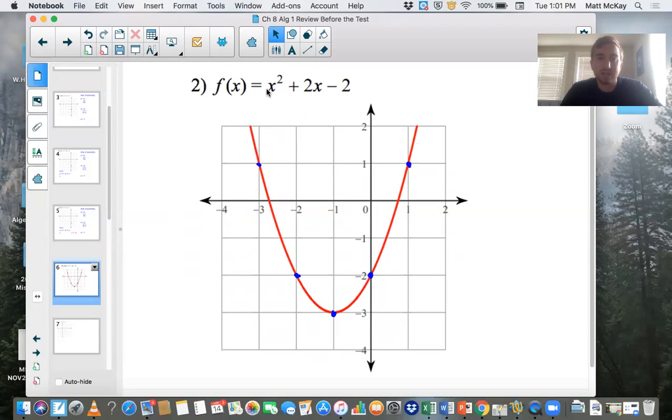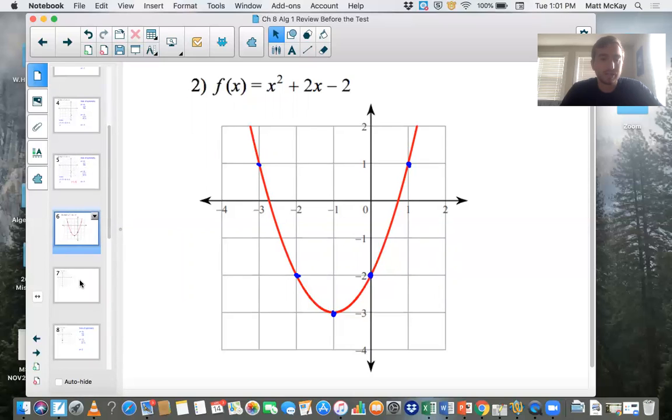And in this case, because it's a positive coefficient in the front, it's going to be the U shape. Okay, let's get another one.